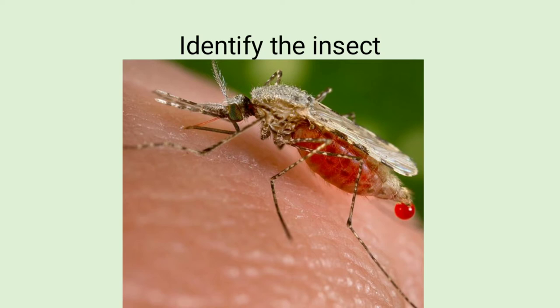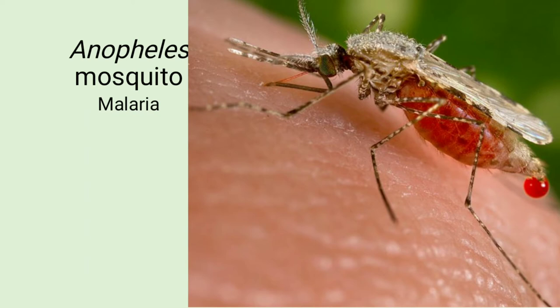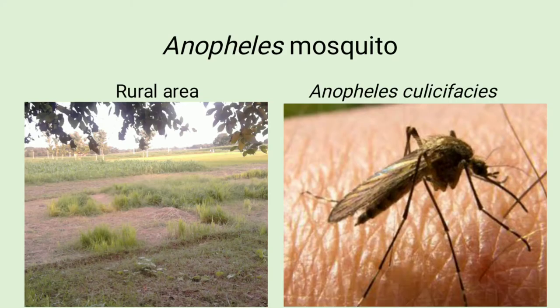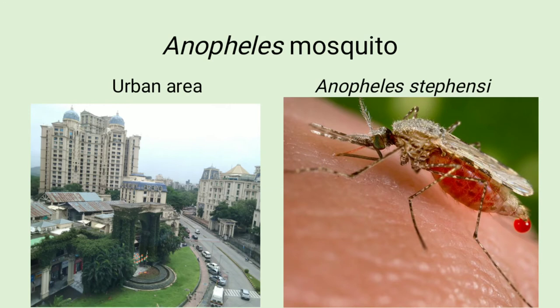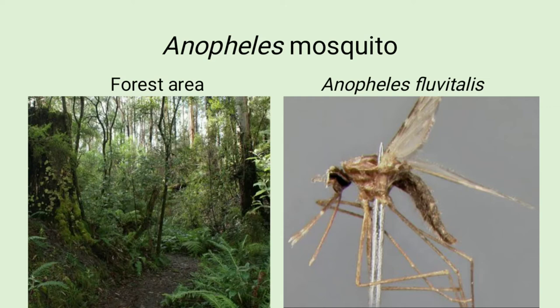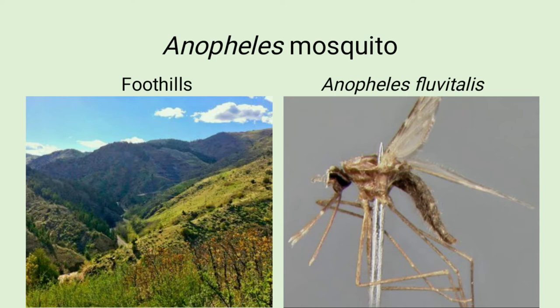Identify the insect: Anopheles mosquito. It transmits malaria, breeding in fresh water. In rural areas there is Anopheles culicifacies; in urban areas, Anopheles stephensi; in coastal areas, Anopheles stephensi; in forest areas, Anopheles fluviatilis — mnemonic: F for fluviatilis and F for forest.